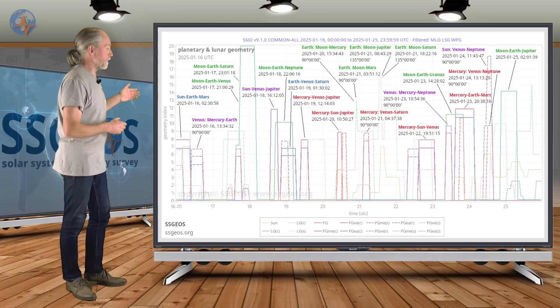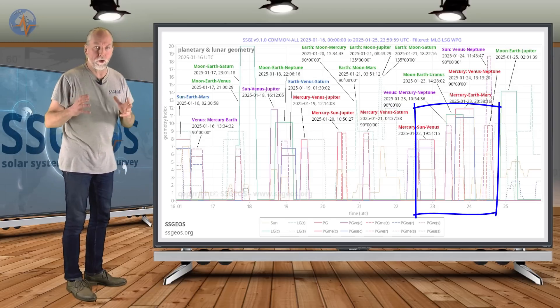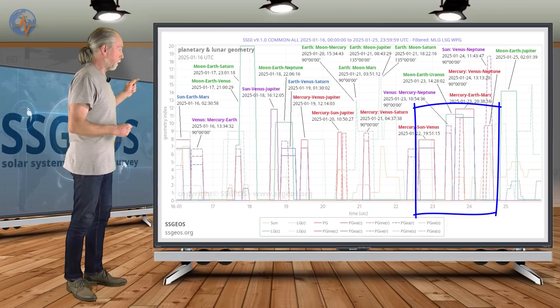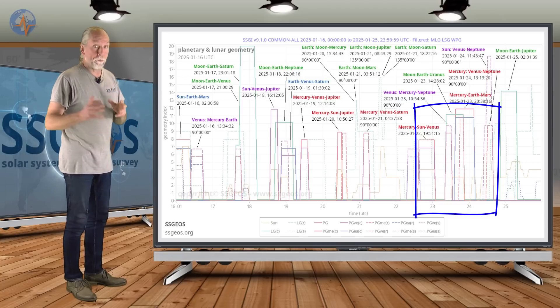And then, like I said, around 23rd, 24th is going to be a convergence, really critical convergence of planetary and lunar geometry, primarily planetary geometry.